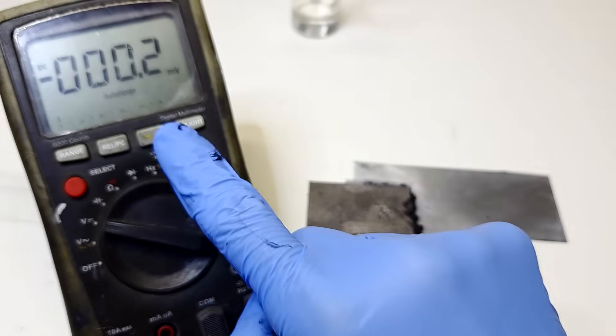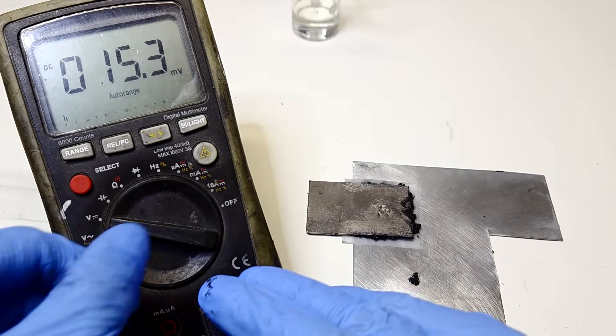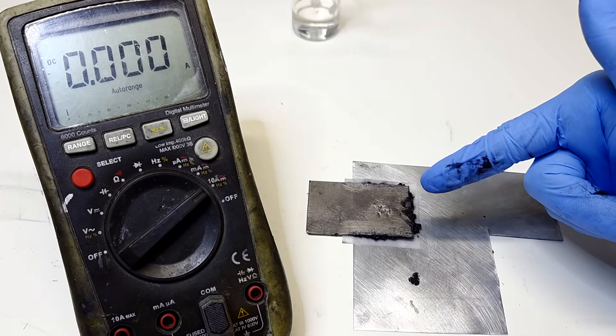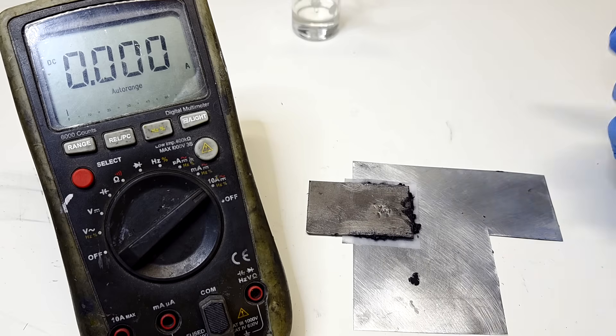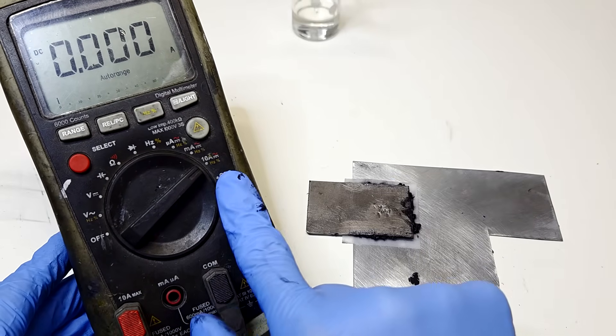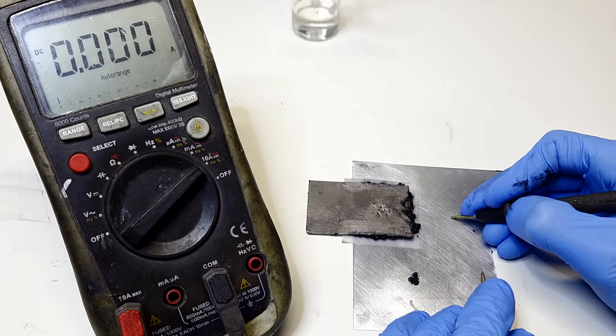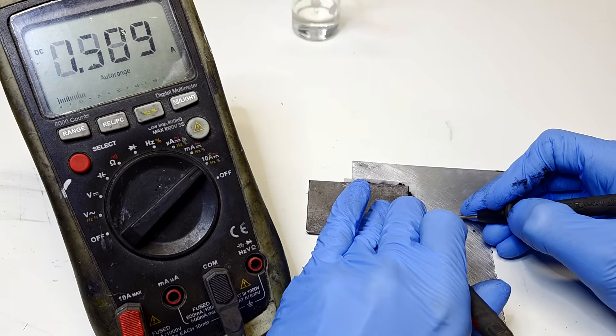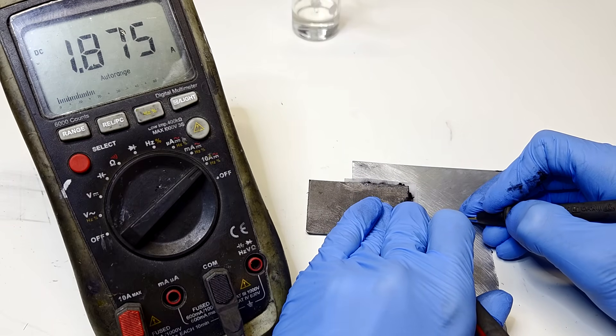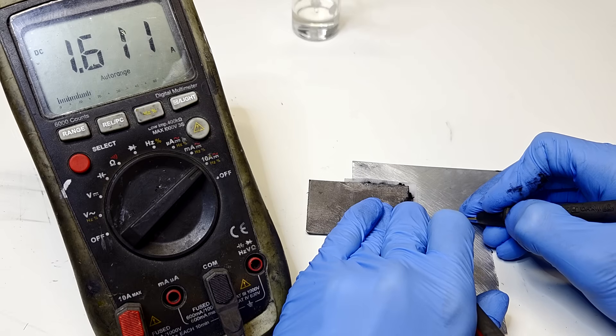But now I will also measure the current because actually this is the point of this video, to see what current this homemade battery will produce in this short current test. So I go to 10 amps. And yeah, so actually I don't have any problems to reach 2 amps.